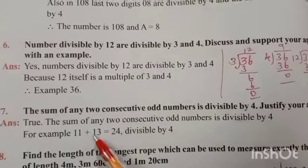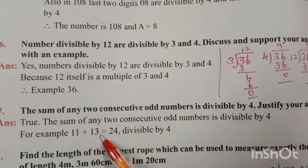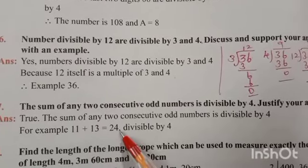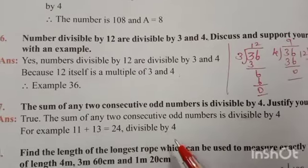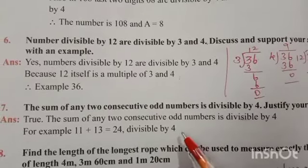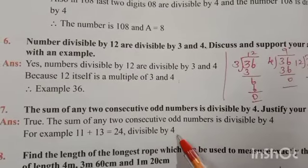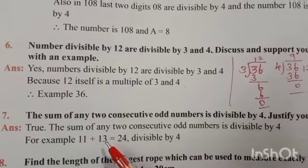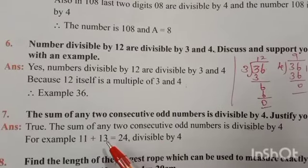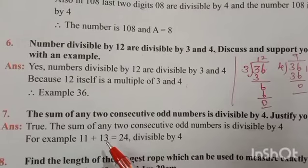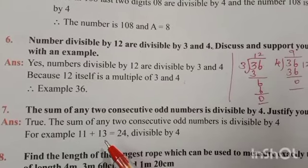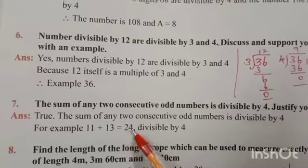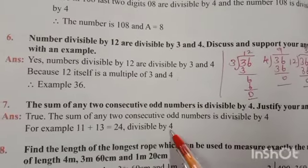For example, 11 plus 13. 11 is an odd number, and the next odd number after 11 is 13. So 11 plus 13 equals 24. This 24 is divisible by 4. So the statement is verified.